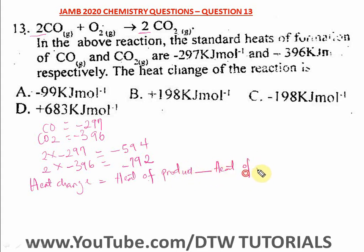So the heat of product is -792, and the heat of reactant is -594. Let's put this in brackets: -792 minus (-594). You know that minus minus is plus.